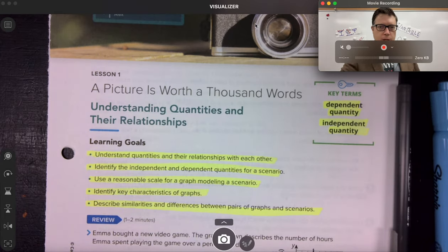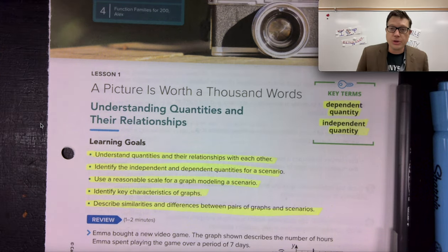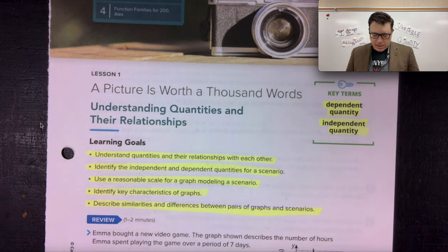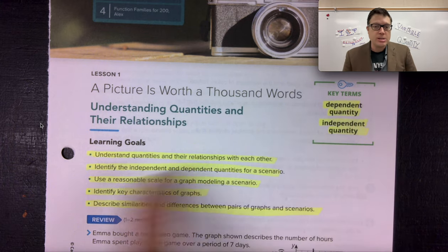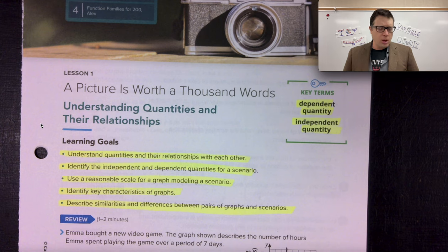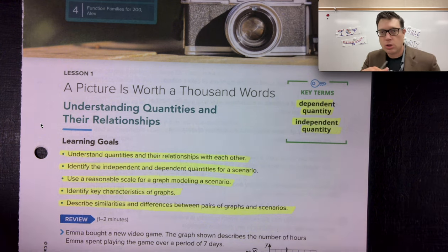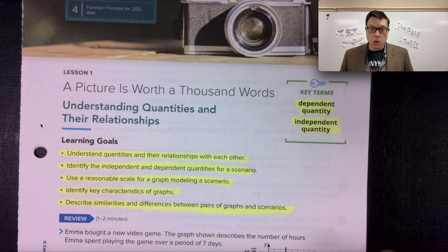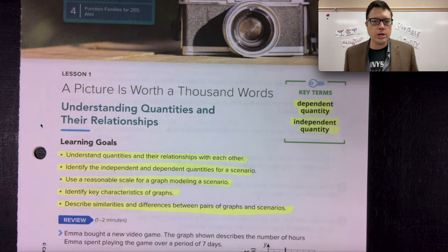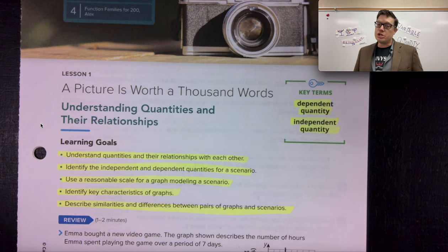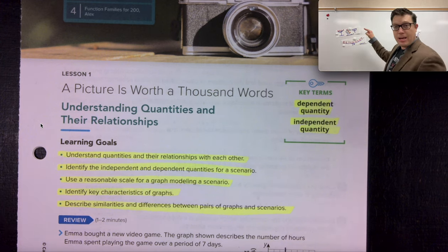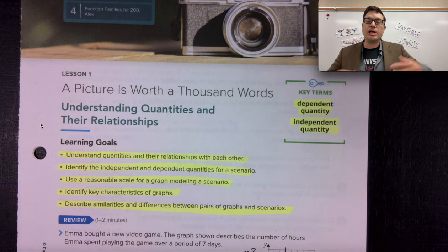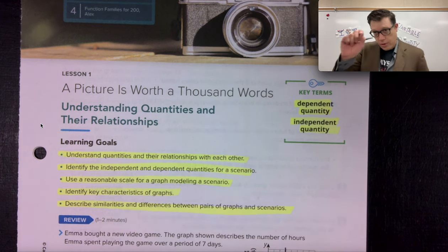So as I resize the window and I look at this concept, a picture is worth a thousand words. I'm going to always recommend, let's go ahead and just get into processing our material by highlighting vocabulary words and our learning goals. And the learning goals really well coincide with those I can statements that either I've mentioned in class or I'll mention later on that if you're doing your job learning and understanding the material along the way, you should be able to say yes to I can understand quantities, vocabulary word, and their relationships with each other. I can identify the independent and dependent quantities for a scenario. I can understand a reasonable scale. I can use a reasonable scale for a graph to model a scenario.